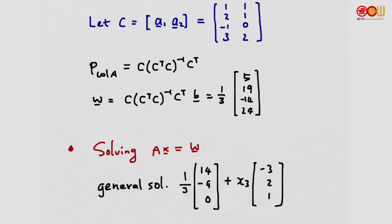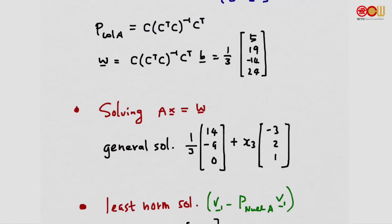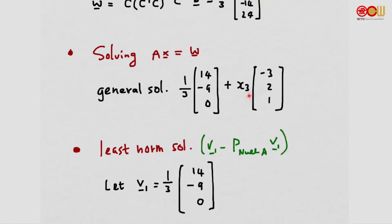To choose the solution with the least norm, we recall it is obtained by starting from a solution v1 and subtracting the orthogonal projection of v1 onto the null space of A. If we choose x3 equals 0, the free variable term vanishes, giving a particular solution vector. Let's choose that as v1.